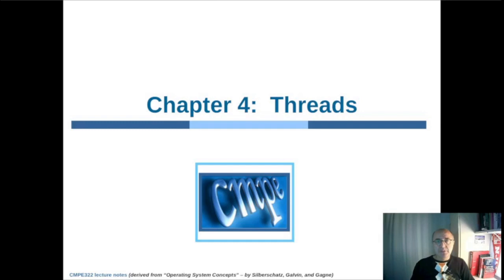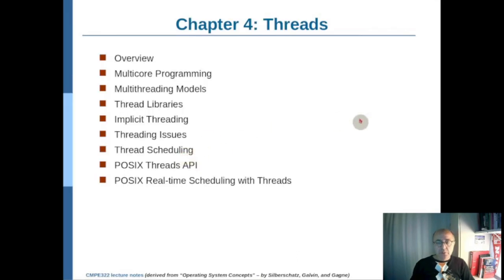In this chapter, we'll be discussing the threads concept and also have a look at how multi-threaded programs run in an operating system. The agenda is as follows: we will first discuss the general overview of threads and look at how multi-core programming can be done and discuss the multi-threading models. We will look at thread libraries and how implicit threading is done, and finally discuss some threading issues.